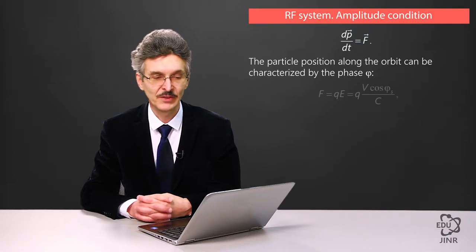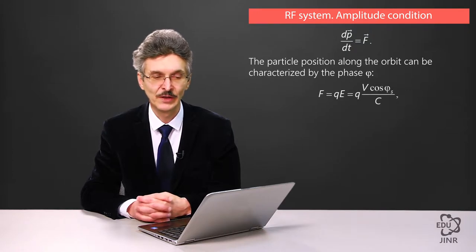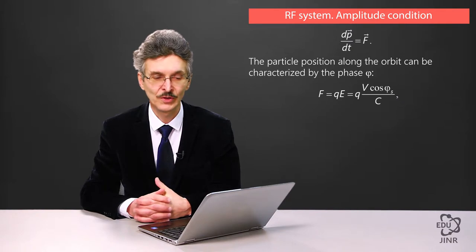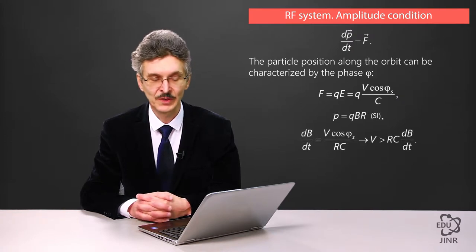As field strength, we use the voltage amplitude at the gap. The voltage at the resonator gap multiplied by the cosine of the radiofrequency phase, where the particles cross the gap. If we divide this value by the circumference, we will get the equivalent magnitude of the electric field accelerating the particles.